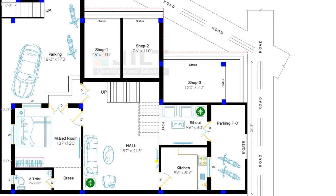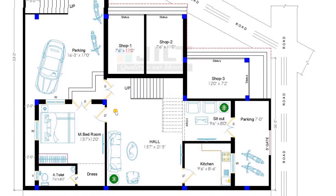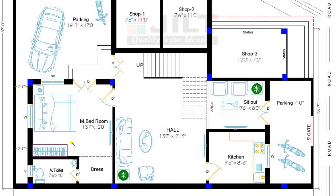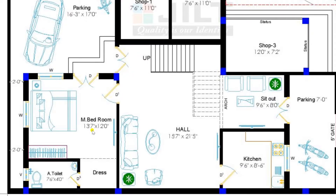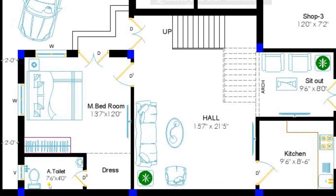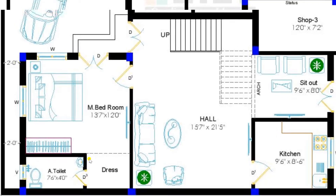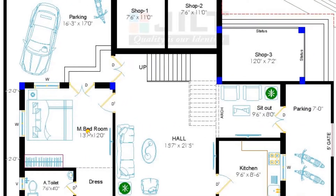In the hall we have plotted a sofa set along with an LCD projector. On the right side we have provided one kitchen of dimension 9 feet 6 inches by 8 feet 6 inches along with a platform and a wash basin. Returning back to the hall, from the hall you can also enter to the master bedroom. The master bedroom has a lavish area of dimension 13 feet 7 inches by 12 feet, attached with a toilet of dimension 7 feet 6 inches by 4 feet. A dressing room is also provided.